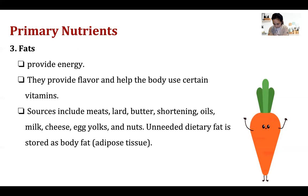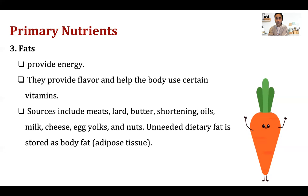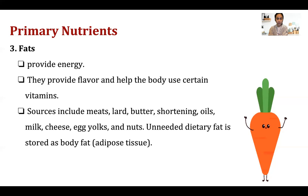Fats are also an energy provider. If you don't have carbs — if you've metabolized all your carbs — your body will start burning fats. Fats provide flavor and help the body use certain vitamins. That's the principle behind the ketogenic diet: you only eat fats, no carbs, so the body burns only fat — which is why you lose weight. Sources of fats include meats, butter, shortening oils, milk, cheese, egg yolks, and nuts.